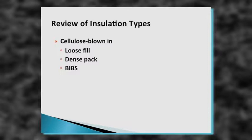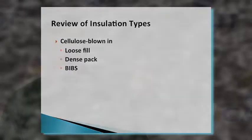Then we have BIBS — blown-in bats. This is used in new construction where walls and sheeting are already up. You staple cheesecloth along the wall, poke a hole in it, and do a dense pack. It's called blown-in bats rather than dense pack because you have a hard surface on one side and cheesecloth on the other — not two hard surfaces. Then the sheet rockers come and put drywall up over the top of it.